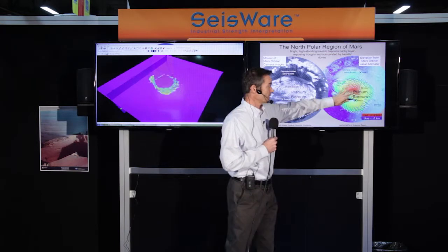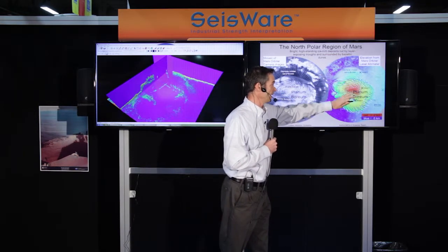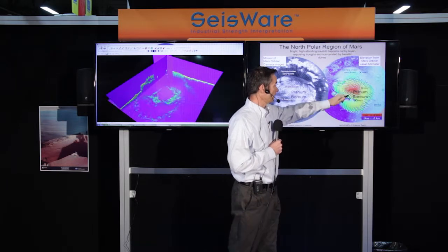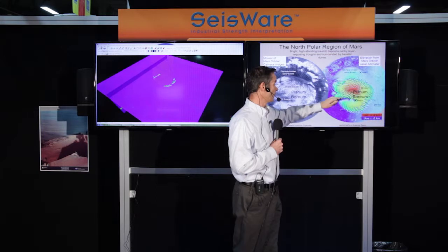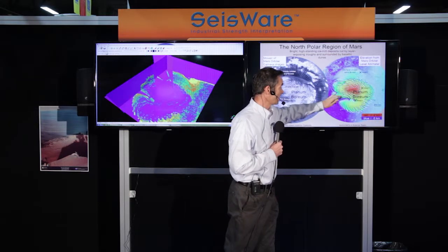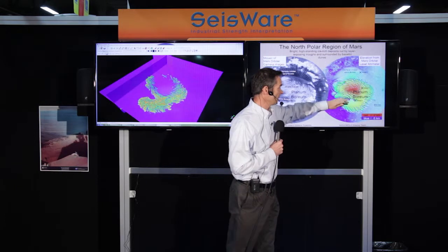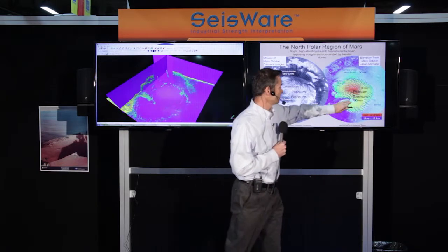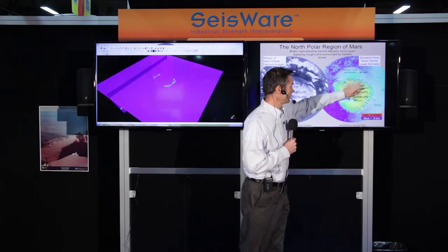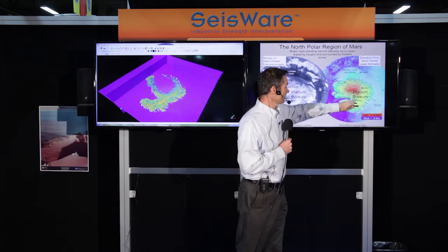The Planum Boreum is a high-standing region, about 3 kilometers above the surrounding area, and cut into it are these spiral patterns of troughs. There's also a large chasma called Chasma Boreale that cuts in and separates the main lobe of deposits from a southern lobe called Gemina Lingula.